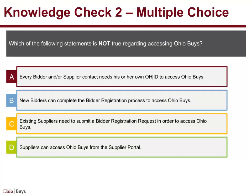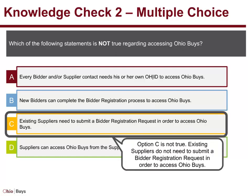Knowledge Check 2. Multiple Choice: Which of the following statements is not true regarding accessing OhioBuys? Option A: Every bidder and/or supplier contact needs his or her own OHID to access OhioBuys. Option B: New bidders can complete the bidder registration process to access OhioBuys. Option C: Existing suppliers need to submit a bidder registration request in order to access OhioBuys. Option D: Suppliers can access OhioBuys from the supplier portal. Option C is not true — existing suppliers do not need to submit a bidder registration request in order to access OhioBuys.